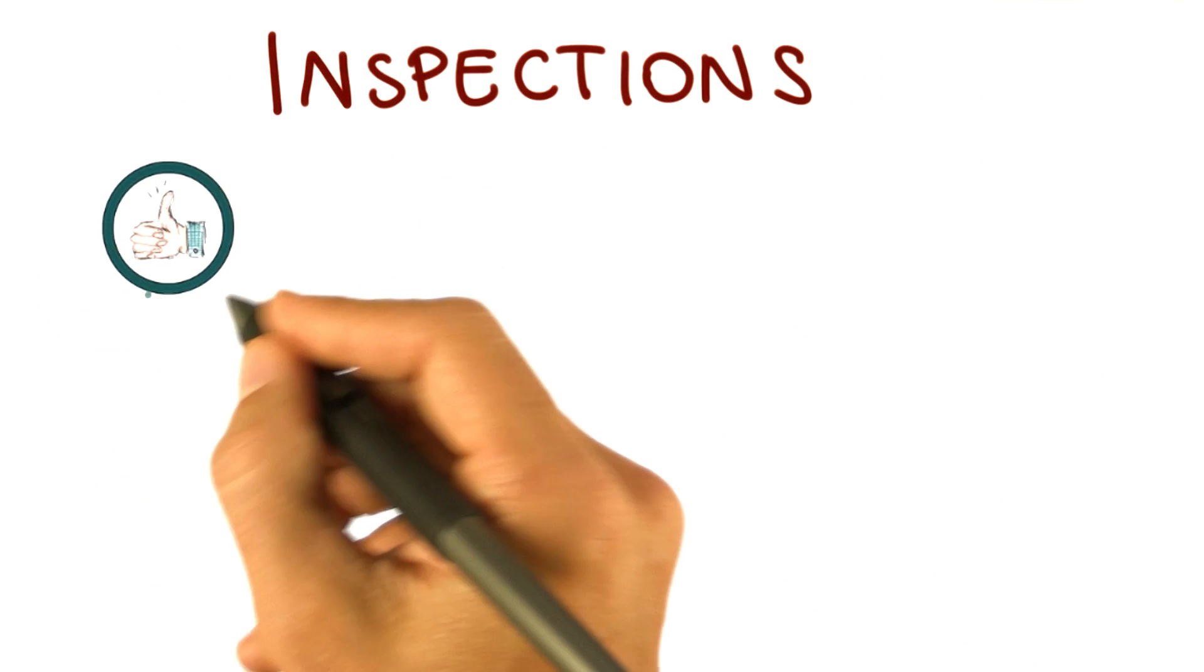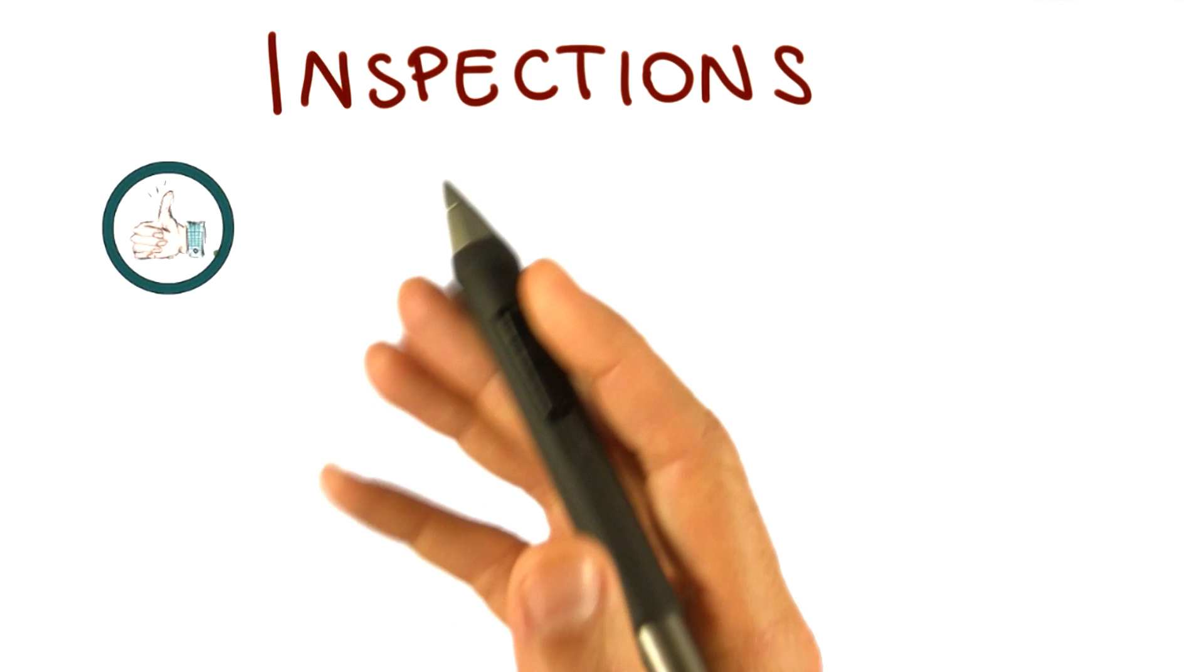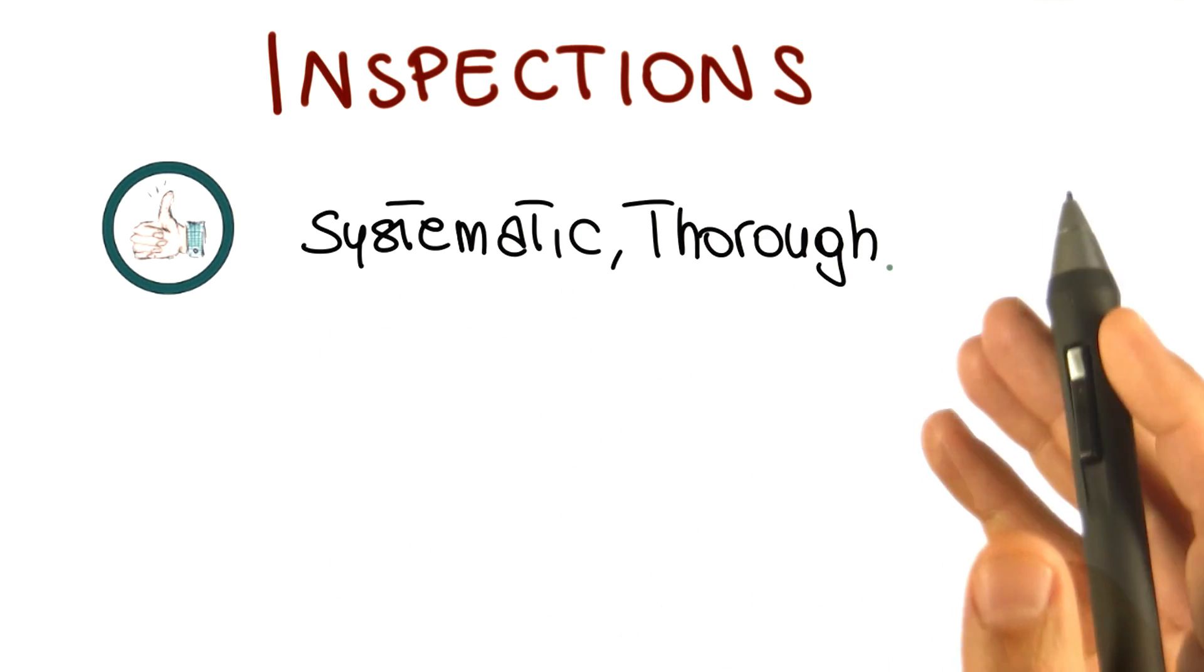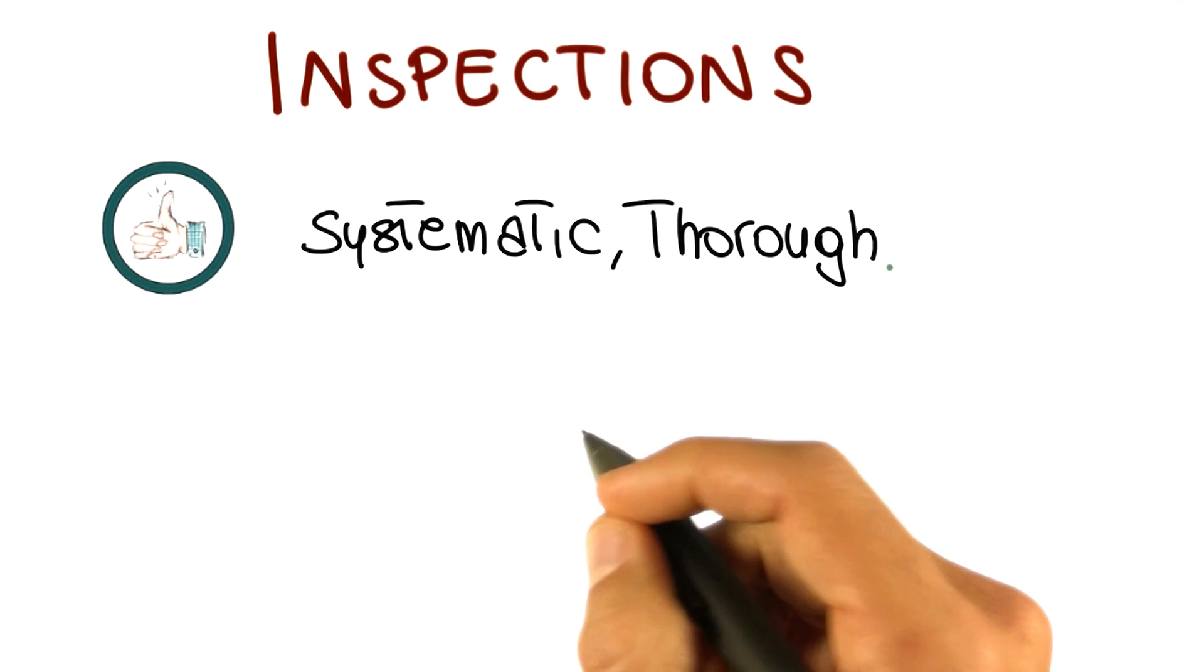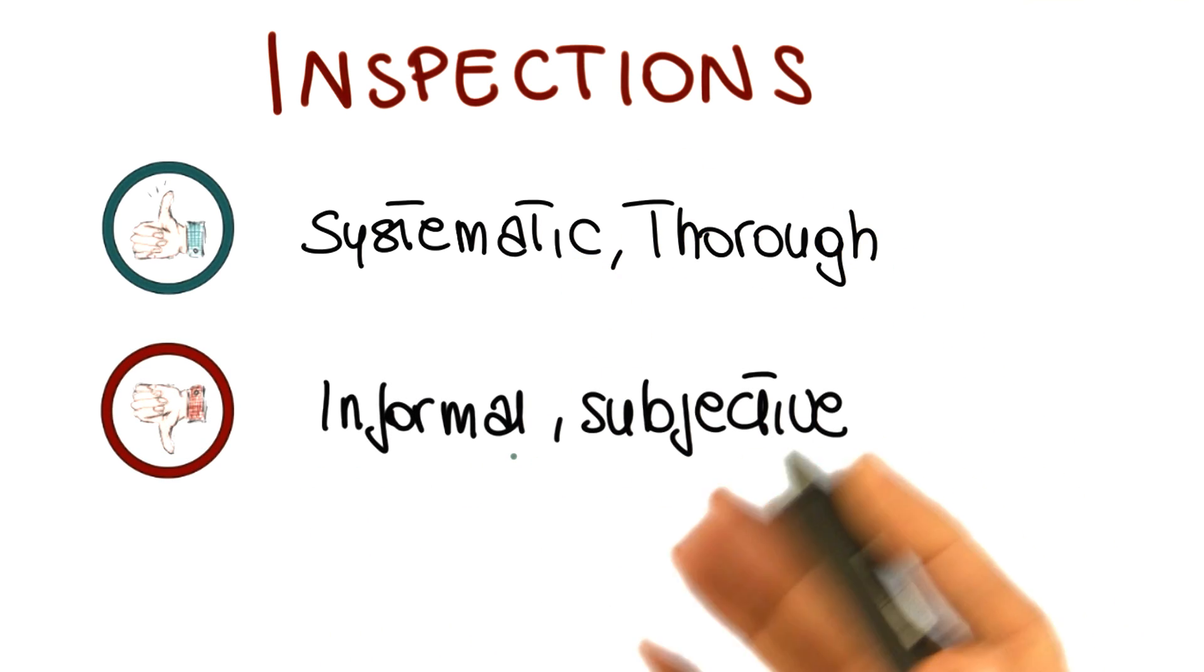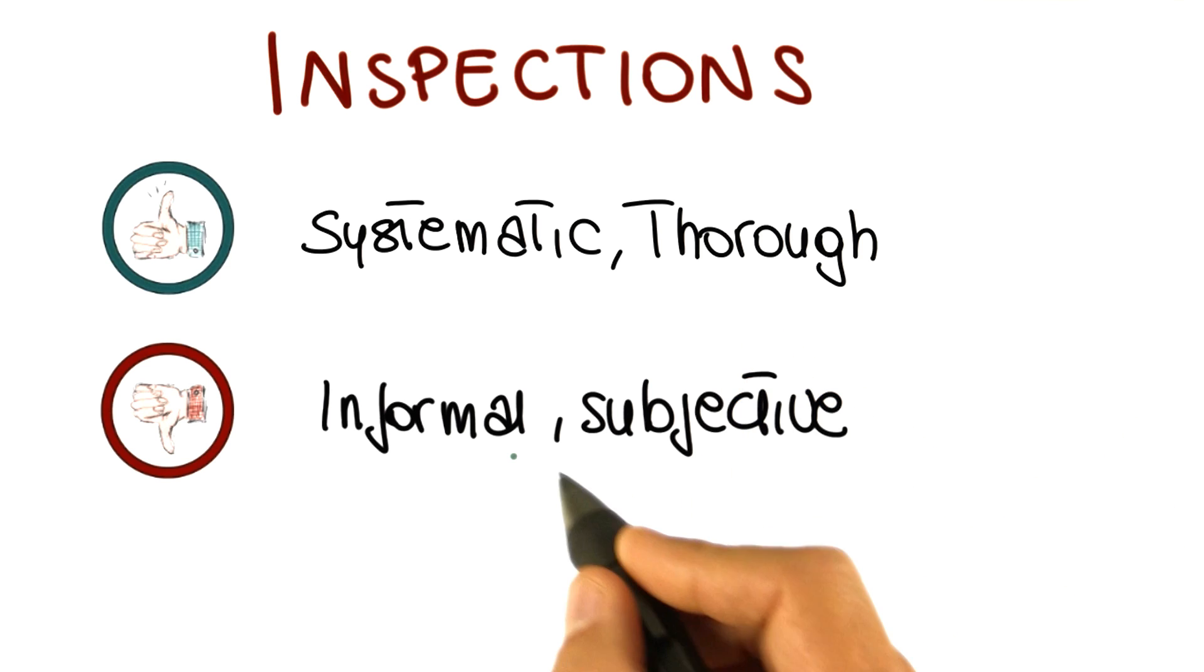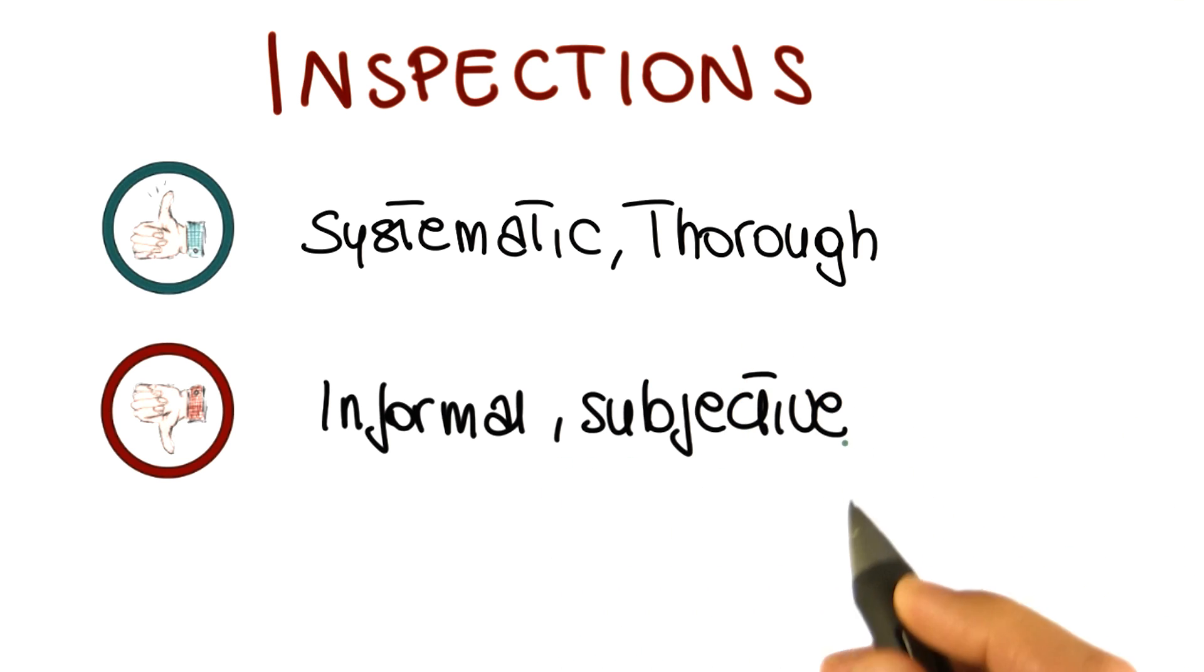The strongest point about inspections is that, when they're done in a rigorous way, they're systematic, and they result in a thorough analysis of the code. They are nevertheless a manual process, a human process. So they're not formal, and their effectiveness may depend on the specific people performing the inspection. So its results can be subjective.